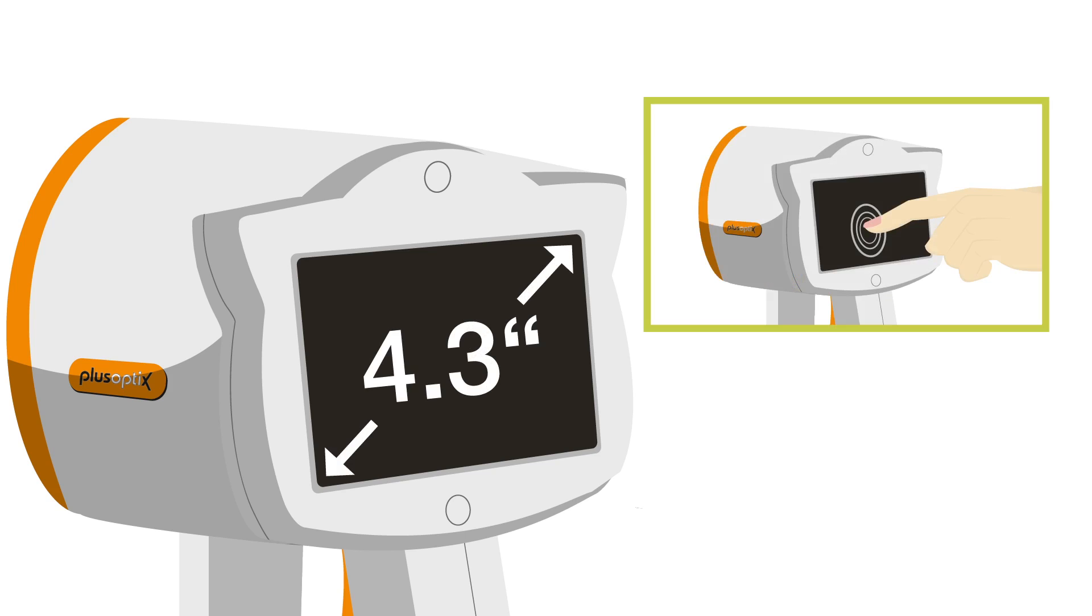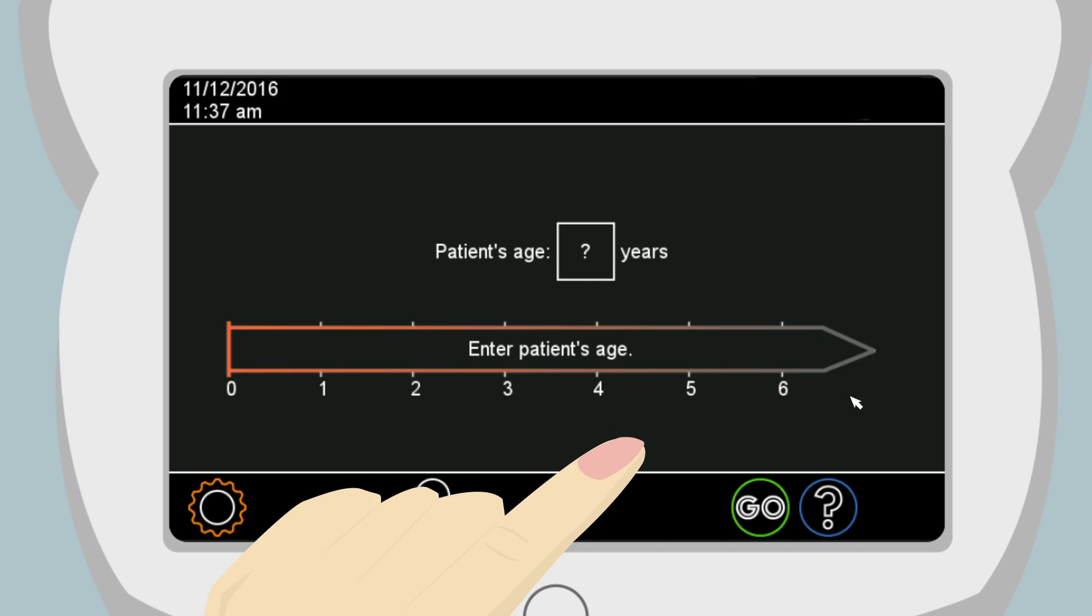Resistive means it will respond to the pressure of your fingernail or a blunt pen tip touching the screen. Simply touching a button will activate the selection.